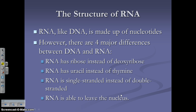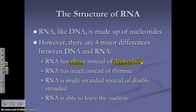So what is RNA? RNA is ribonucleic acid — it's still a nucleic acid, and its monomer is still nucleotides. But there are some major differences between DNA and RNA. The sugar in RNA is ribose, while the sugar in DNA is deoxyribose. They're both five-carbon sugars; the deoxyribose in DNA is just without an oxygen.